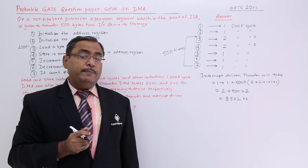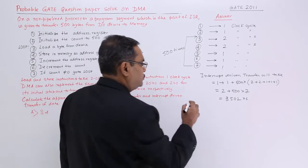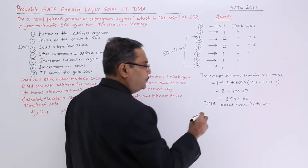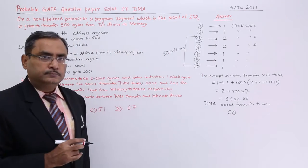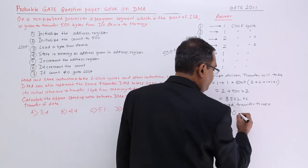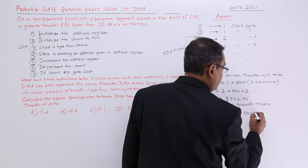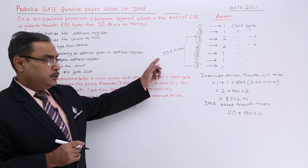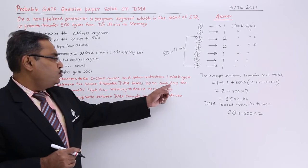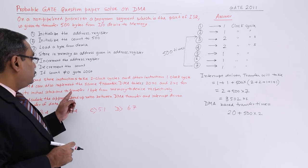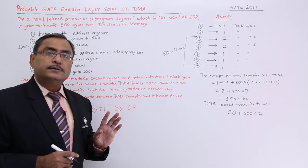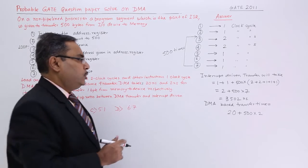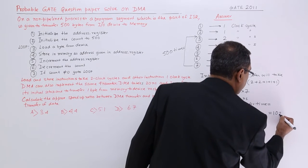Now let us calculate the DMA transfer time. DMA-based transfer time equals 20 nanoseconds for the initial setup, plus 500 × 2 nanoseconds for transferring each of the 500 bytes. We do not need to account for all those instruction details because the DMA controller takes over and does the data transfer. So the total DMA transfer time is 20 + 1000 = 1020 nanoseconds.